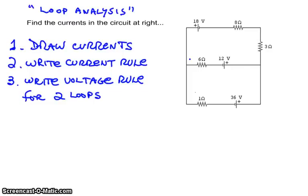Okay, let's do an example of loop analysis. It's going to take a while, so I've got to try to squeeze this into 15 minutes. We want to find the currents in the circuit at right. Three steps: we've got to draw the currents, write the current rule based on how we draw them, and then write the voltage rule for two loops. These are all Kirchhoff's. The voltage rule says that for any closed loop, the voltages must add to zero.